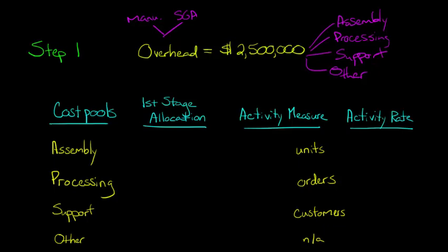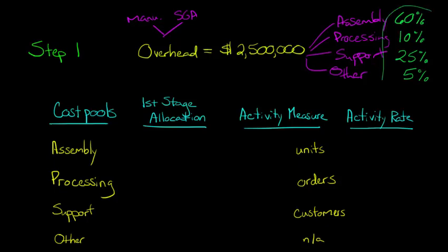After interviewing people, we find that assembly accounts for 60% of overhead, processing orders is about 10%, support is 25%, and the other category is 5%. This is your cost system — you design it as appropriate for your firm. You might have additional cost pools or remove one depending on what's relevant. You get this information from your employees, so it's subjective in that sense, but it's going to be more accurate than just using machine hours.